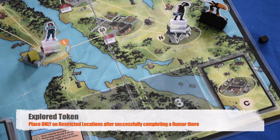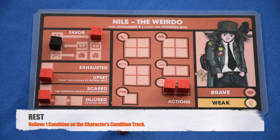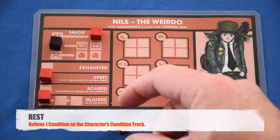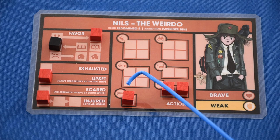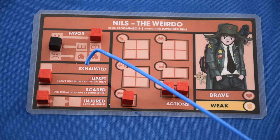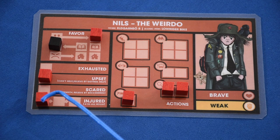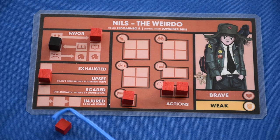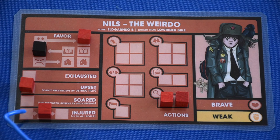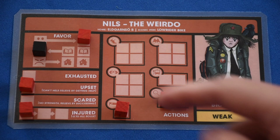Nils has one time token left and decides to rest. Place the time token in the rest action — a character can only take one rest action per turn. Resting can relieve the exhausted, upset, scared, or injured conditions. For an injured condition already at the leftmost space, the rest action removes it and the token goes to the portrait as spent. If the injured token is anywhere else on the track, taking a rest action moves it one space to the left. Each action space has a maximum number of uses per turn: walk can be used four times, bus ride twice, rest once.